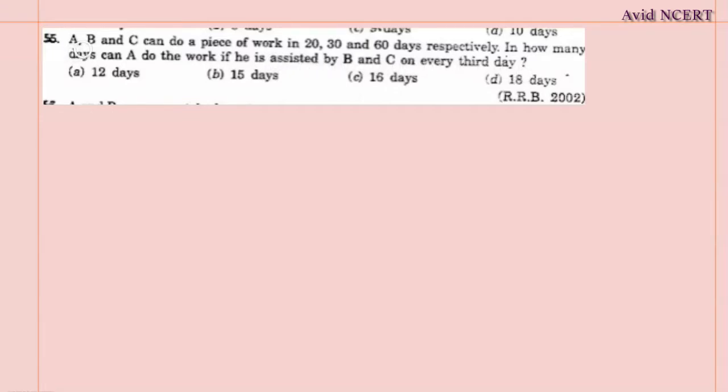From the first sentence, A's 1 day work is 1/20. B's 1 day work is 1/30. C's 1 day work is 1/60.